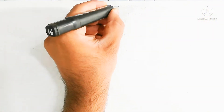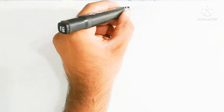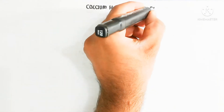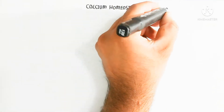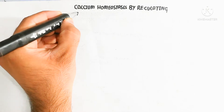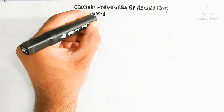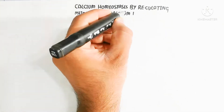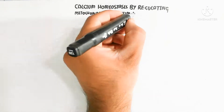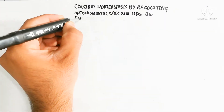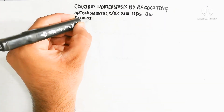Hello. In this video we will discuss about calcium homeostasis, and how regulating mitochondrial calcium has an essential role in cell survival. It is also necessary for understanding cell death when the mitochondria will be damaged.